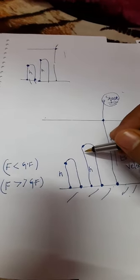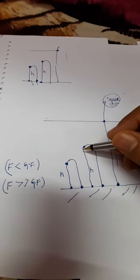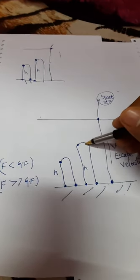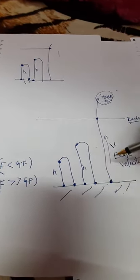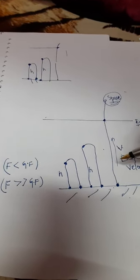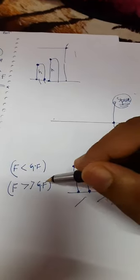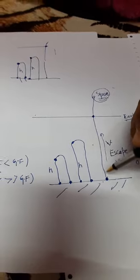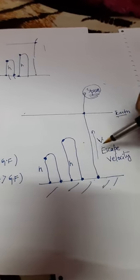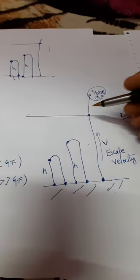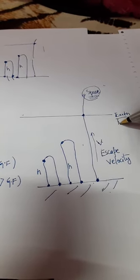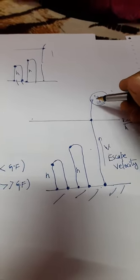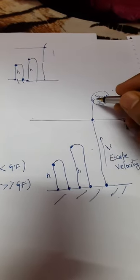In the second case, he applies some more force. It increases the height but then again the gravitational force is so high that it pulls the ball back to the earth surface. But now in the third case, he applies a larger force than that of the gravitational force, and because of that the ball gets some good velocity, escapes the earth's atmosphere or the earth's gravitational pull, and reaches to the space.